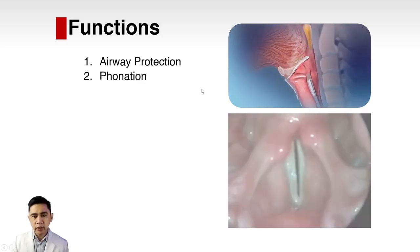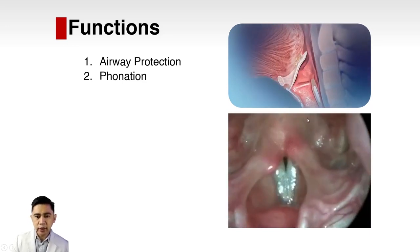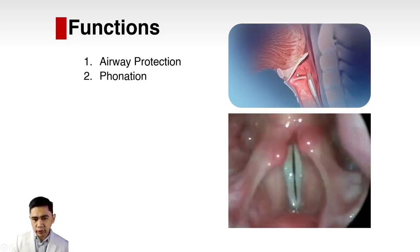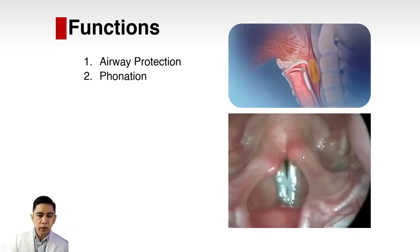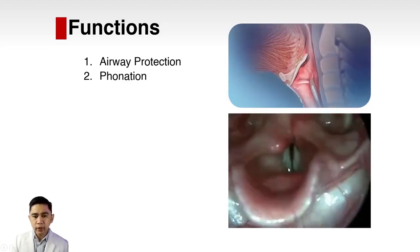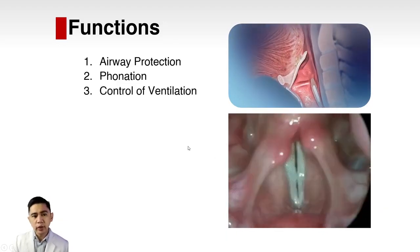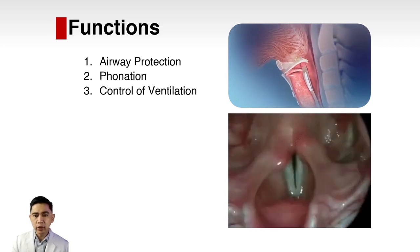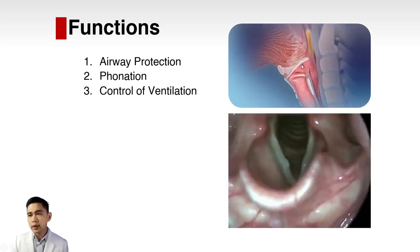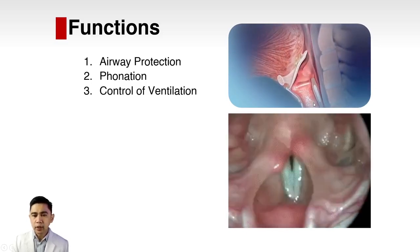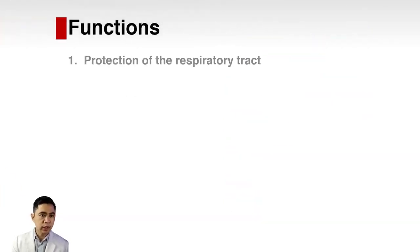The second function is phonation. These are the vocal folds present in the laryngeal complex — shown from the side and from above. When vocal folds vibrate, they produce a sound. The third function of the larynx is control of ventilation — you can actually control the air that goes in and out of your lungs.